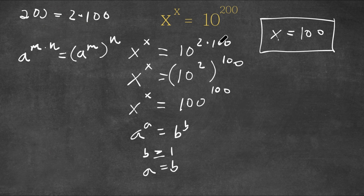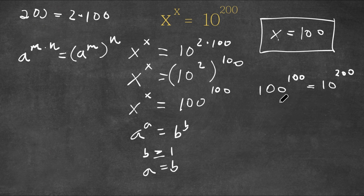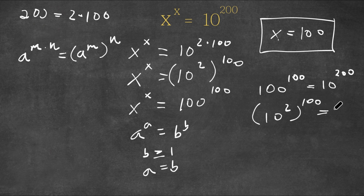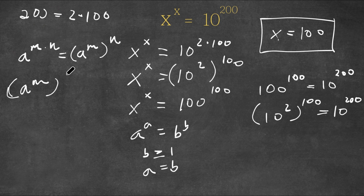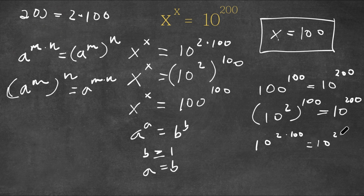Now I'm going to go ahead and plug this in to see if it's right. We have 100 to the power of 100 is equal to 10 to the power of 200. Now 100 is the same thing as 10 squared, so we have 10 squared to the power of 100 is equal to 10 to the power of 200. Using the power rule, 10 to the power of 2 to the power of 100 equals 10 to the power of 2 times 100, which is 10 to the power of 200. So we have 10 to the power of 200 equals 10 to the power of 200, confirming our solution x equals 100.